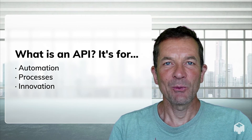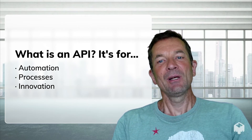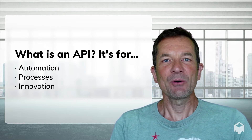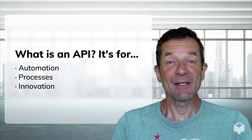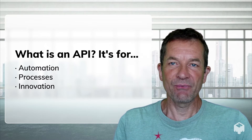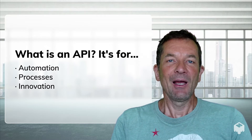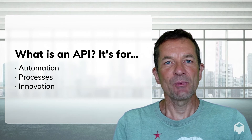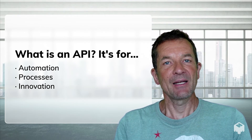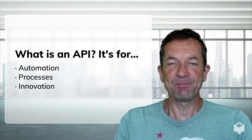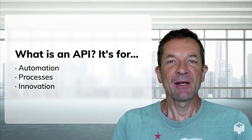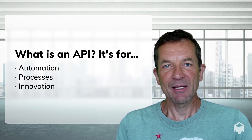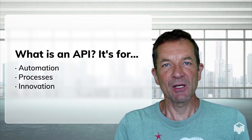What is an API? We'll look at this in today's episode of Getting APIs to Work, where we look at what an API is, or rather what it's for. We'll walk through a couple of examples and build it up a little bit. We start with the fact that an API is built for automation, and then we move on and talk about processes — combining several APIs to build processes.